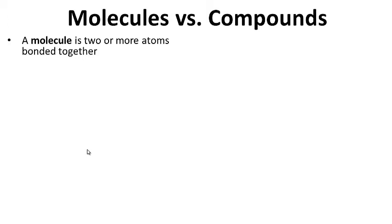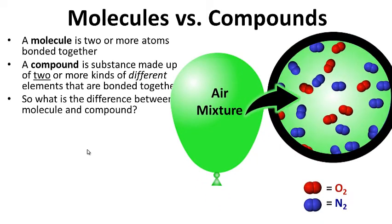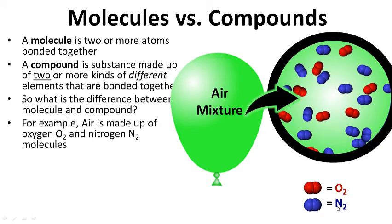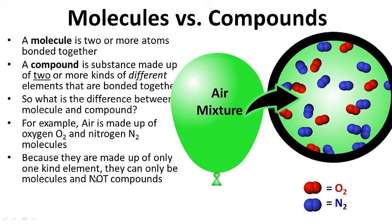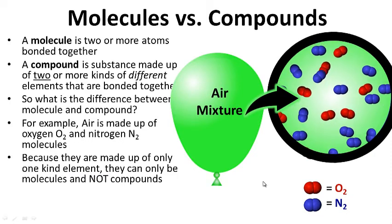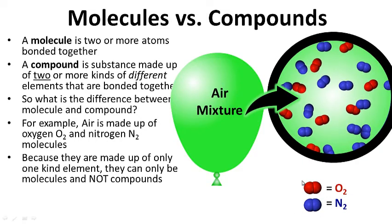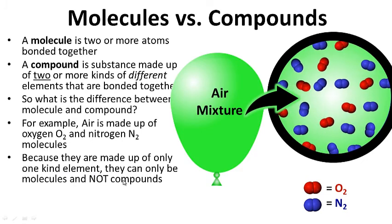A molecule is two or more atoms bonded together. A compound is a substance made up of two or more kinds of different elements that are bonded together. For example, air is made up of oxygen and nitrogen molecules. Because they are made up of only one kind of element — oxygen is only made up of oxygen, nitrogen is only made up of nitrogen — they can only be molecules and not compounds.